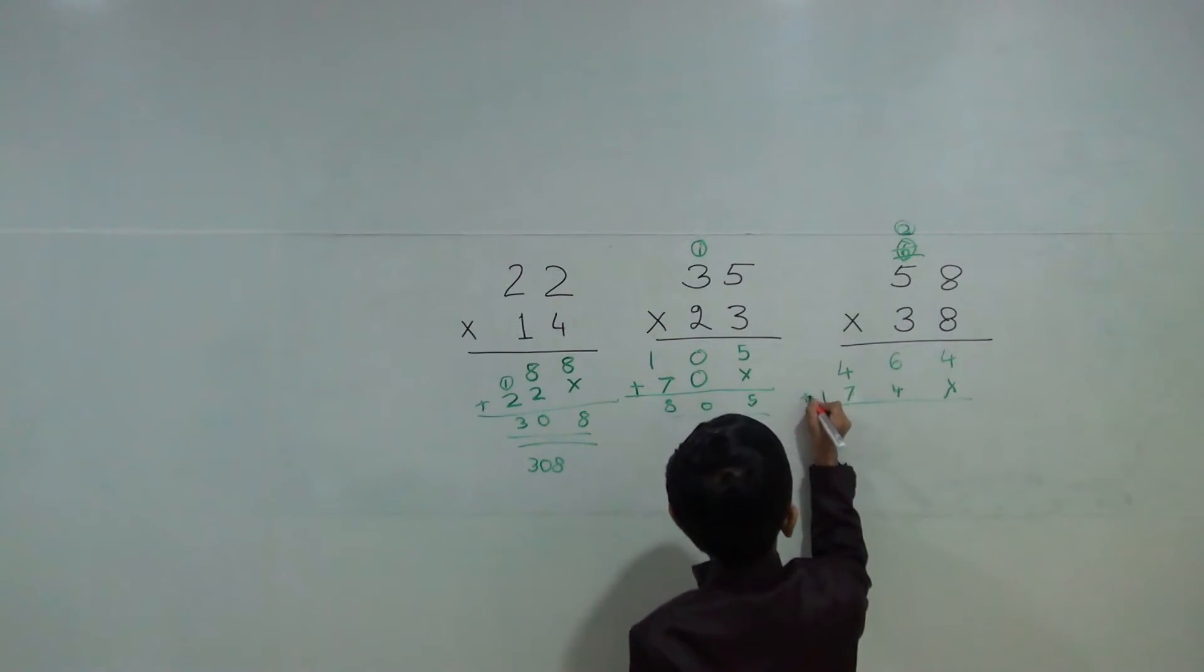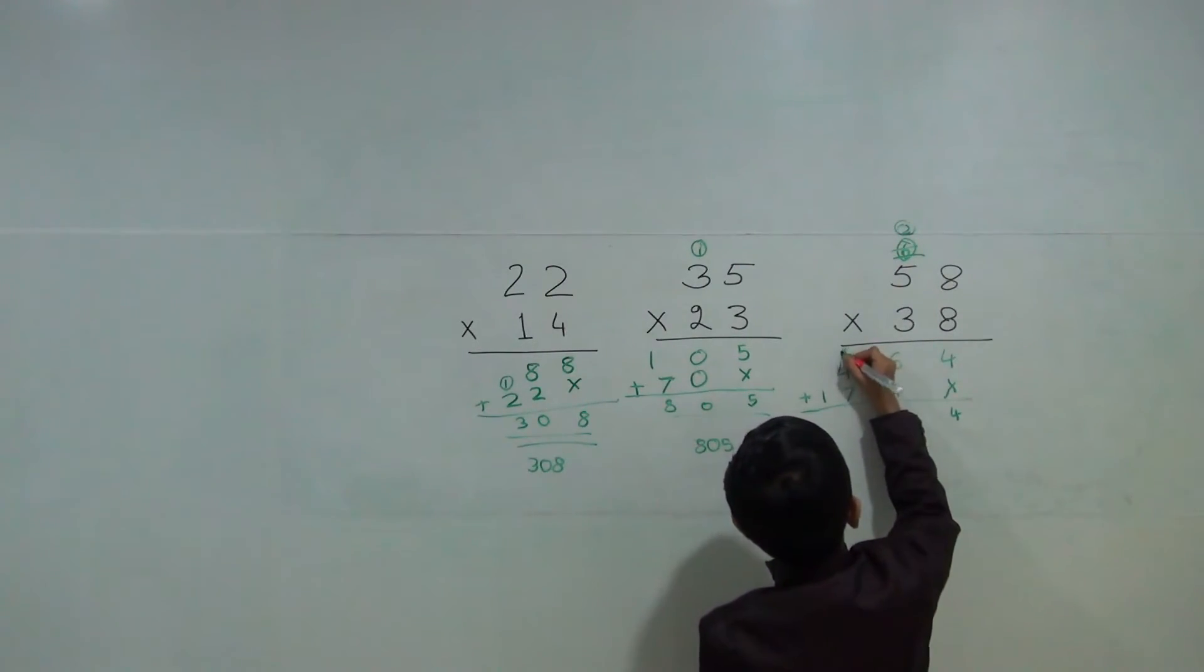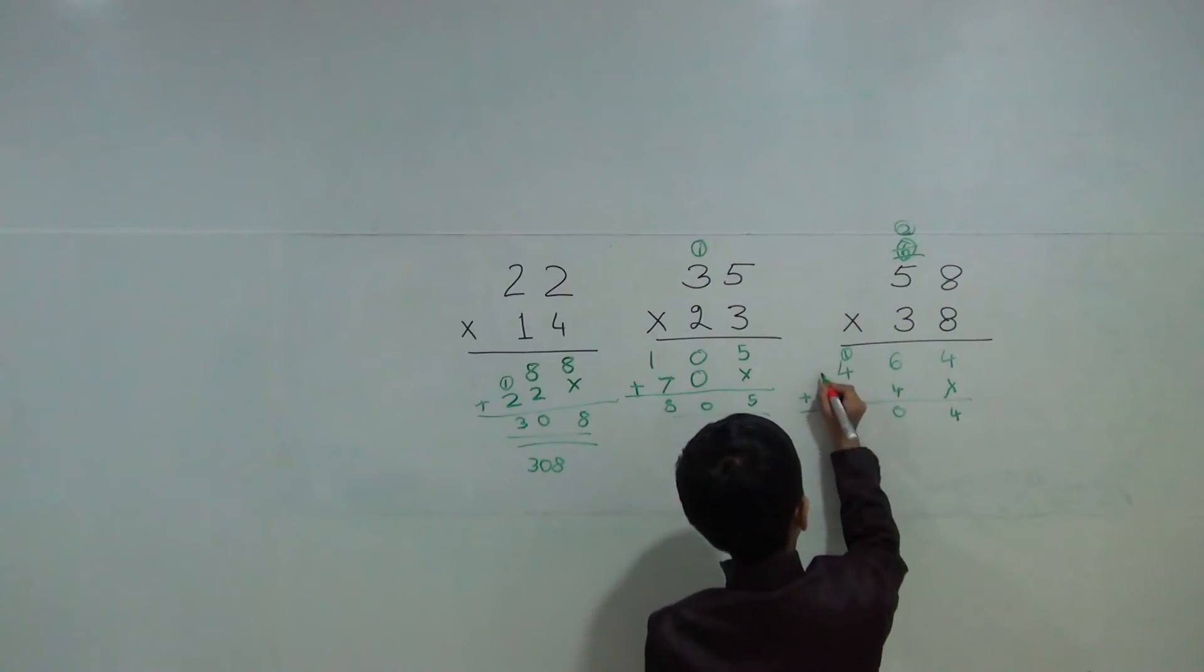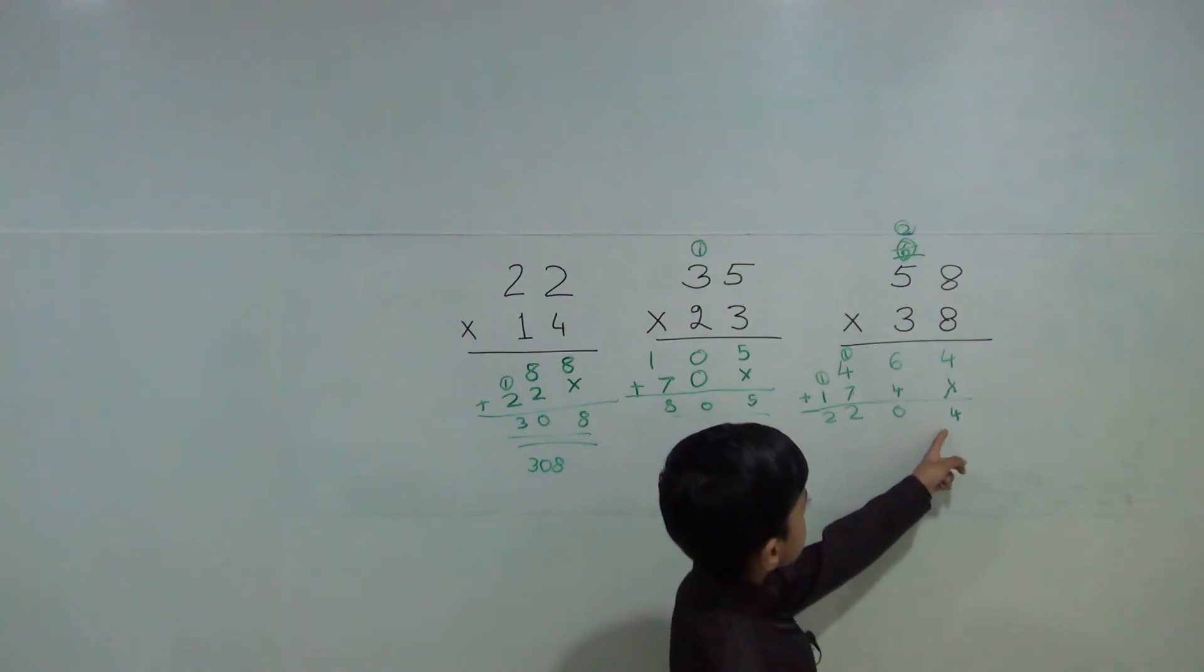Now we will add 4, 10. 7 plus 4 is 11 and 12. Now 2, 2, 6, 4.